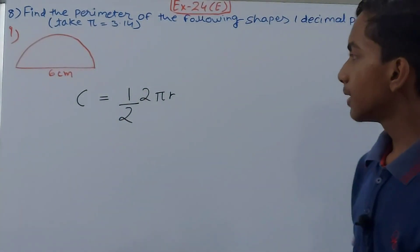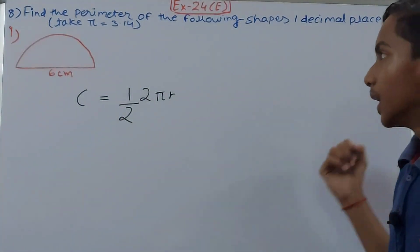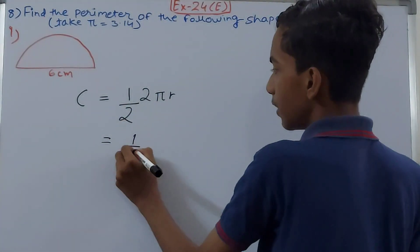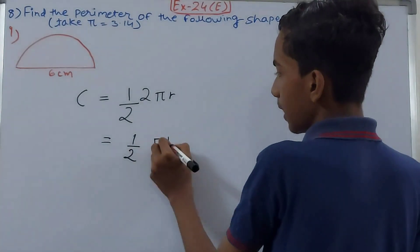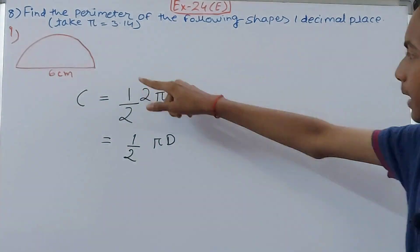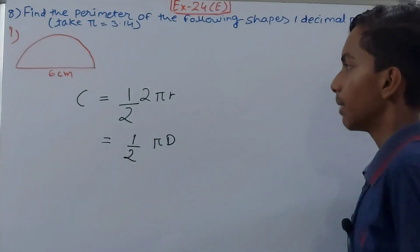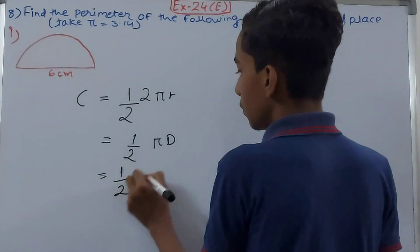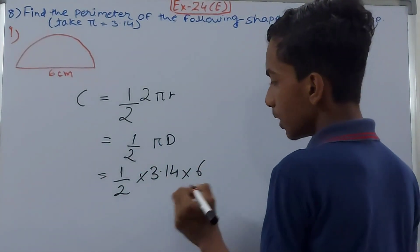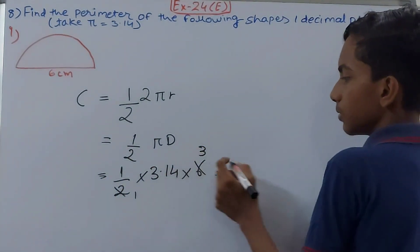So circumference equals 1/2 × 2πr. Since we have the diameter rather than the radius, we rewrite this as 1/2 × π × diameter. Here the diameter is 6, so it becomes 1/2 × 3.14 × 6.